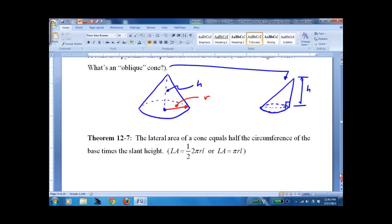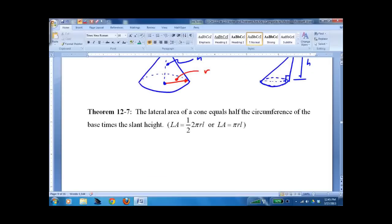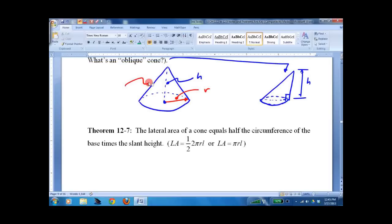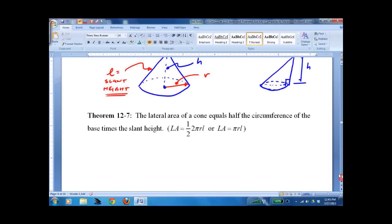So lateral area of the cone is one half the circumference times the slant height. Uh oh. Didn't label slant height. L equals slant height.